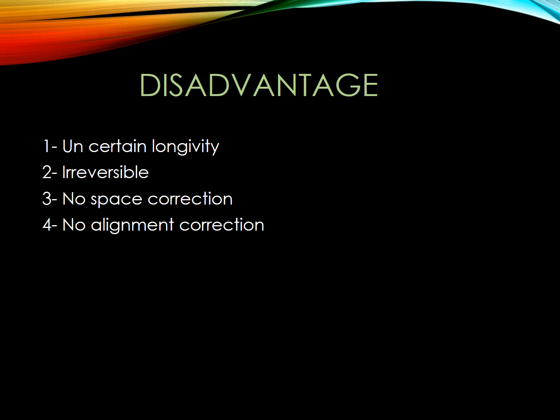Number three: no space correction. If the edentulous space is wider than the mesiodistal width of the tooth that would normally occupy that space, it is very possible to show the denture if the space for the lost tooth is more than usual.